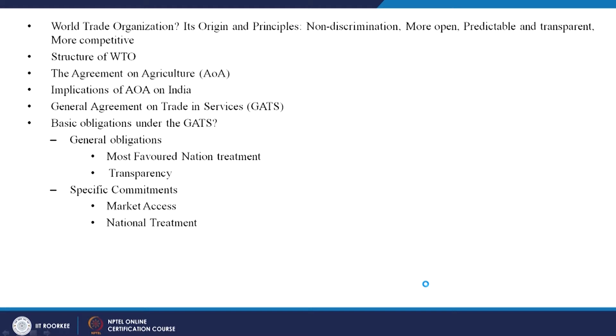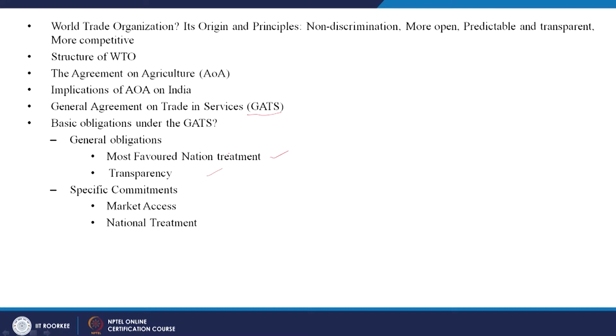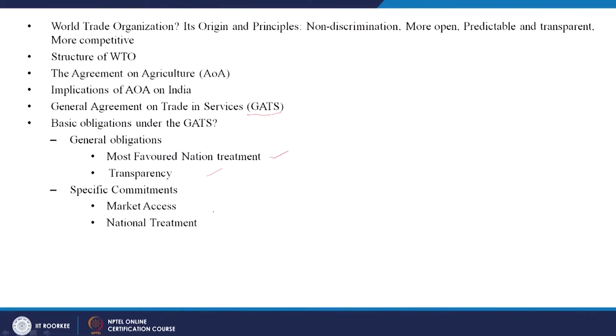Then we moved on to the General Agreement on Trade in Services, called GATS. GATS came up because earlier during the time of GATT, there was only trade for goods — services was not included. The basic obligations under GATS included most favored nation treatment, transparency, market access, and national treatment, meaning every country would be given equal treatment with no difference between domestic producers and international operators. Today we will be covering two other aspects.